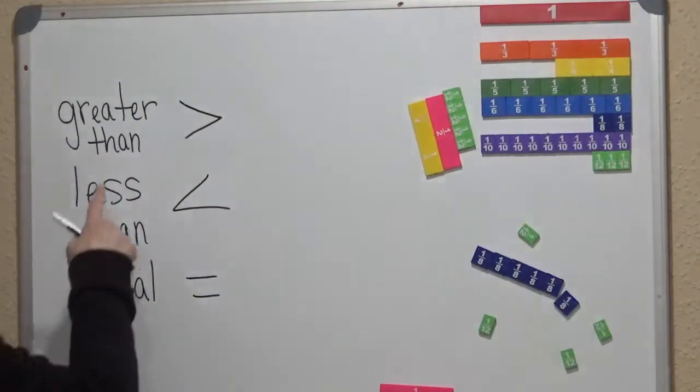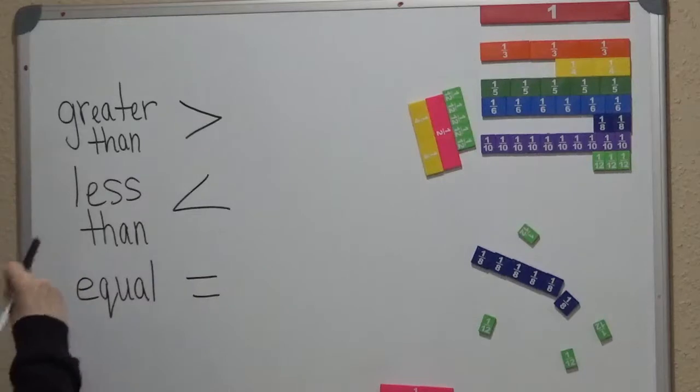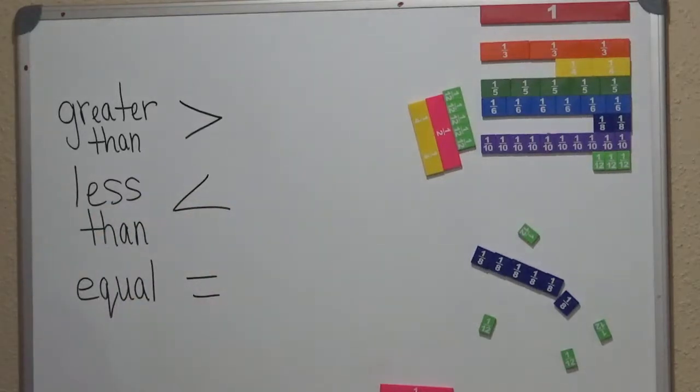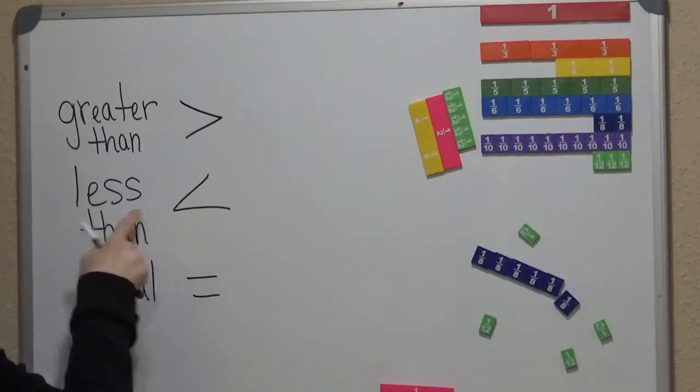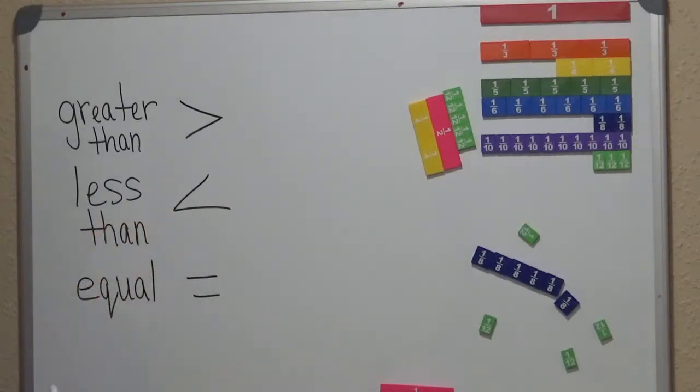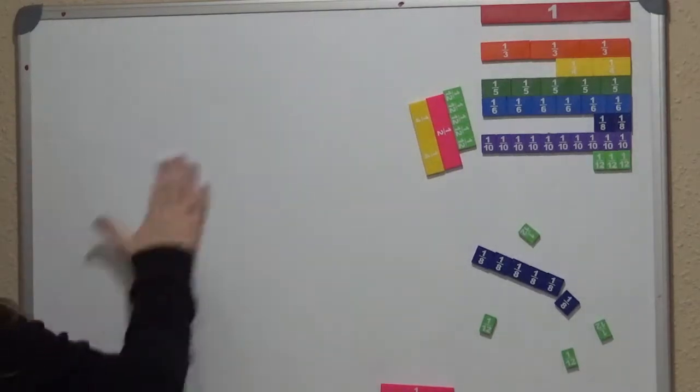So let's go ahead and start. Greater than means the Pac-Man is eating the larger fraction, in this case, because that's what we're going to be working on. Less than, the arrow is pointing towards the lesser number, and equal means the same amount. So let's go ahead and get started. I'll erase this. I just want to make sure that you understand that.